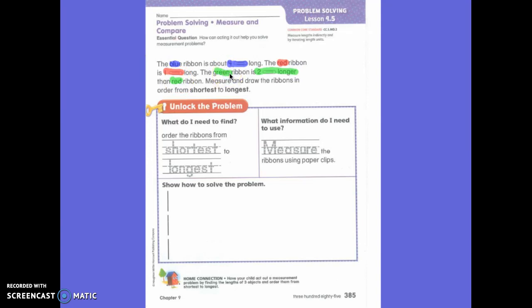Does it tell us exactly how long the green is? No, it does not. It says it is two longer than the red. How long is the green one? We have to figure that out first. It's two more than the red, so it's about three long. Would you guys agree? The green is really three paperclips now.